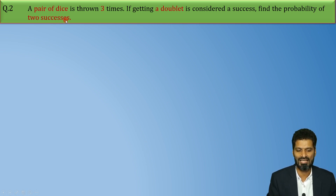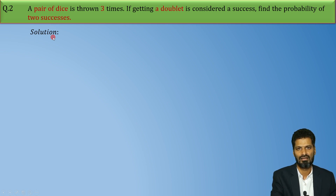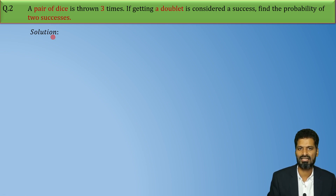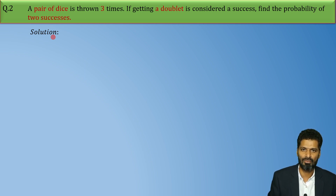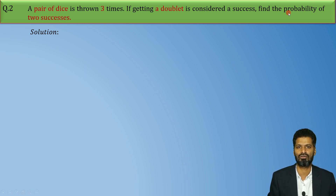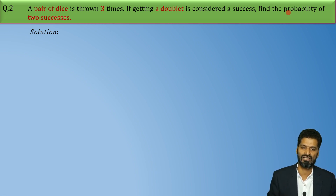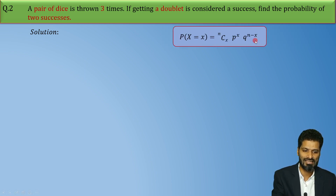So without wasting any time, let's quickly begin with the solution. First of all, this question is a clear cut binomial distribution case. And in binomial distribution, whatever probability you need to find, for that you only need to use one formula. And what is that formula?